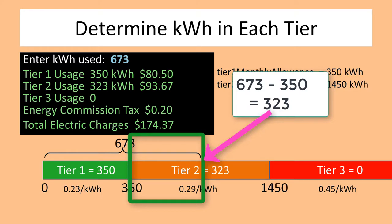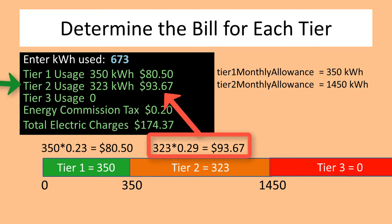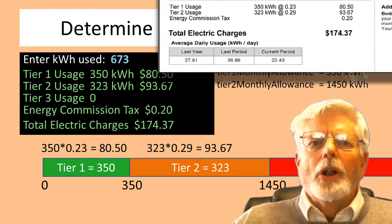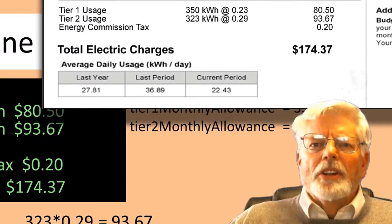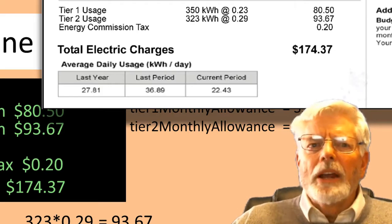I didn't go into tier 3 this month. The bill for tier 1 is 350 × $0.23, which is $80.50. The bill for tier 2 is 323 × $0.29, which is $93.67. There is nothing in tier 3. And finally, the energy commission tax of $0.20 gives a total of $174.37. We can see this on the actual bill. Since nothing was in tier 3, it is not necessary to display tier 3 on the bill.